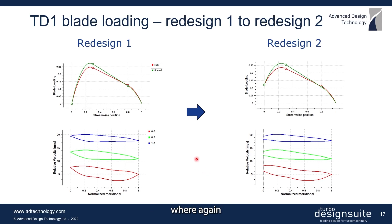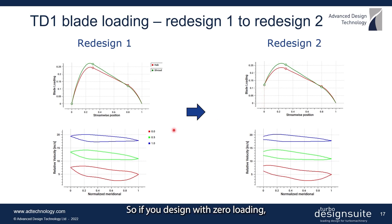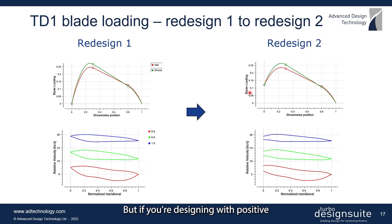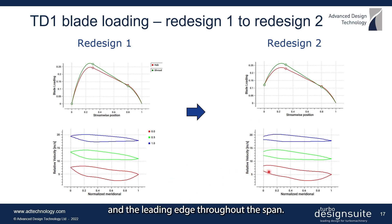In the next redesign, we again kept the same forced vortex RV-theta distribution but increased the leading edge loading in TurboDesign One. By increasing this loading you actually design with positive incidence — with zero loading you get zero incidence, but with positive loading you get positive incidence. This is also reflected in these plots where we can now see a gap at the leading edge throughout the span.